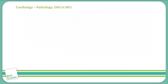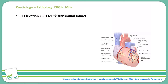Some of the common changes that we can see in EKGs will indicate what type of myocardial infarction we are undergoing. If we see ST elevations, that is also known as a STEMI — a transmural infarct, meaning that it goes through the entire wall of the myocardium.